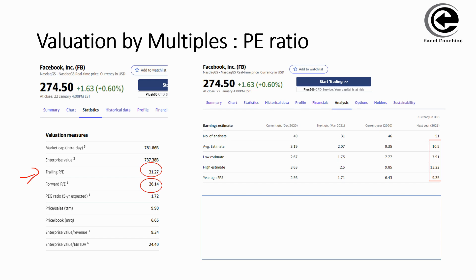Coming back to PE ratio for Facebook, there are two ratios: the trailing PE, which is 31.27, and the forward PE ratio, which is 26.14. All this data is readily available in Yahoo Finance — you search for Facebook and it brings up their financials. There are a number of tabs: a summary tab, a chart tab. The PE ratio data and other statistics are found in the statistics tab, which is the third tab on Yahoo Finance for a particular company.